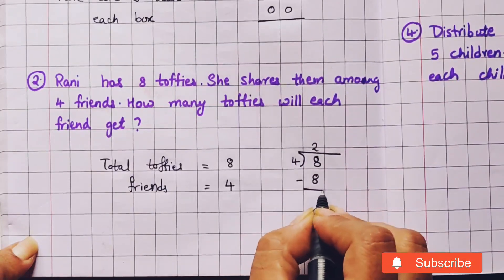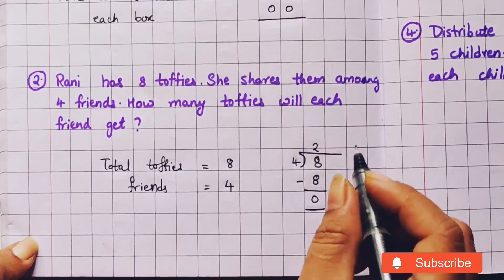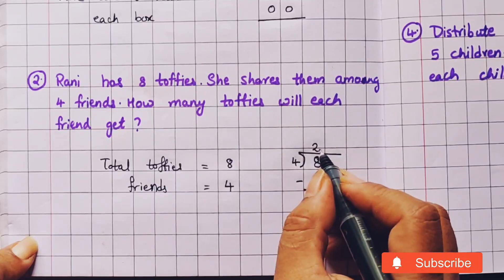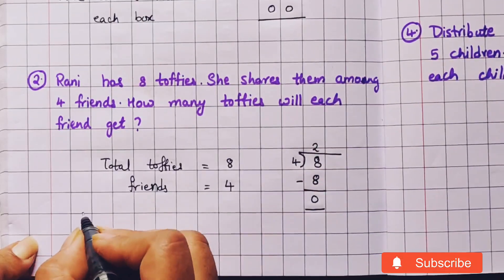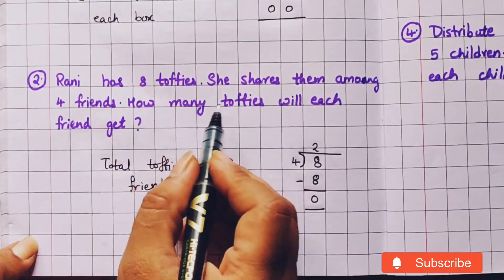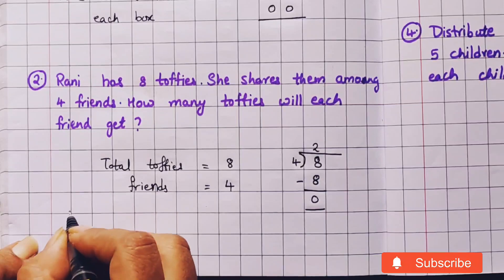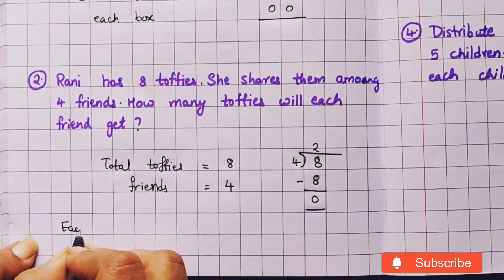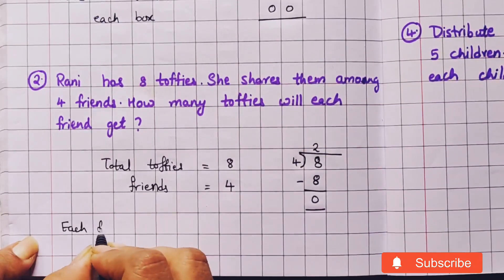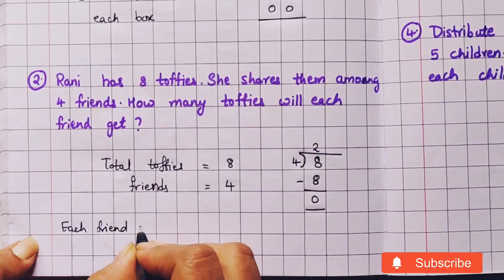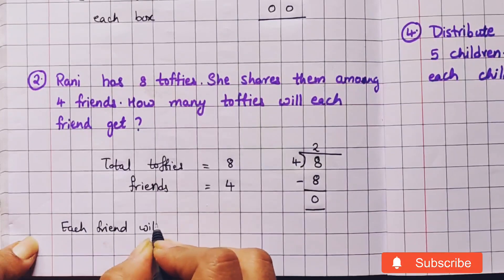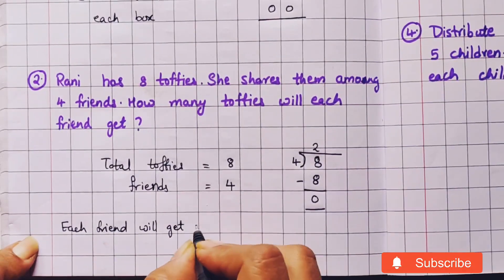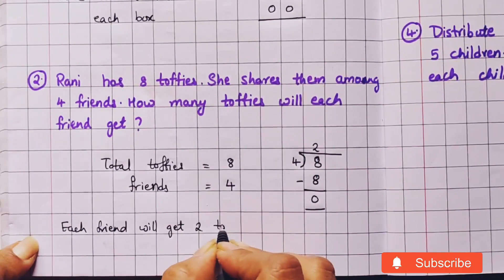Now let's do the subtraction. We get 0. So the answer is 2. How many toffees will each friend get? Each friend will get 2 toffees.